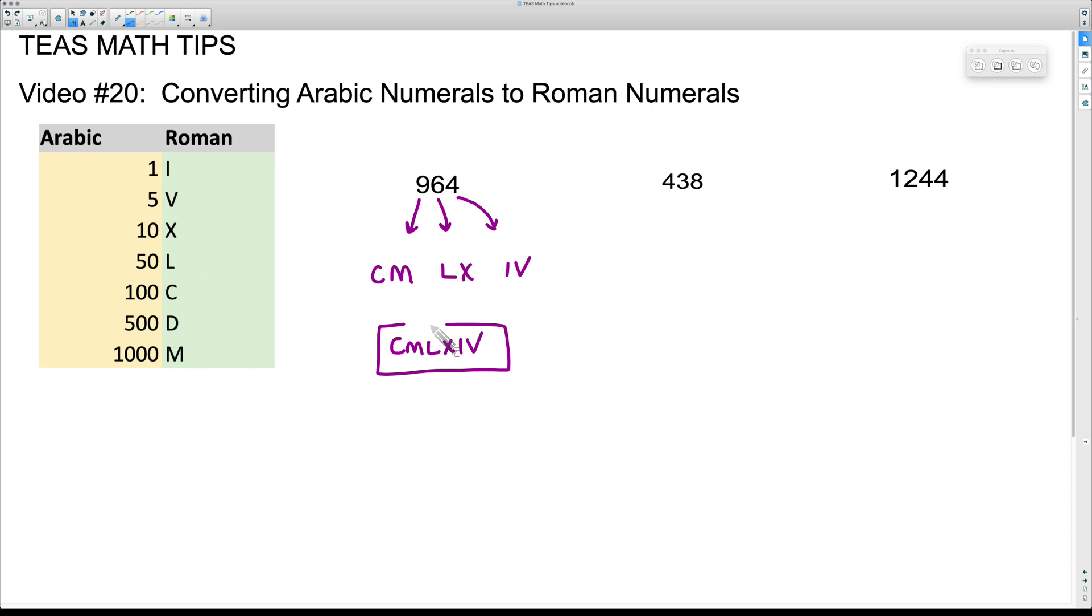All right, this next one here, 438. So 400, we don't want to put four C's, but what we can do is subtract 100 from 500 to take care of the 400. Let's put a C in front of the D. The C is 100, the D is 500, so 500 minus 100 is 400.